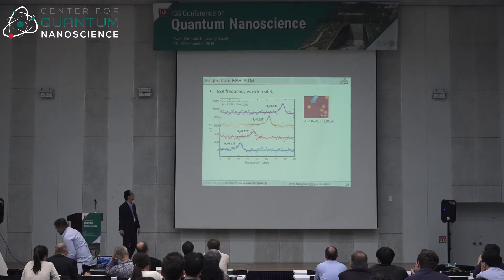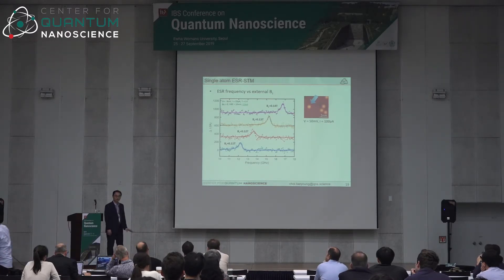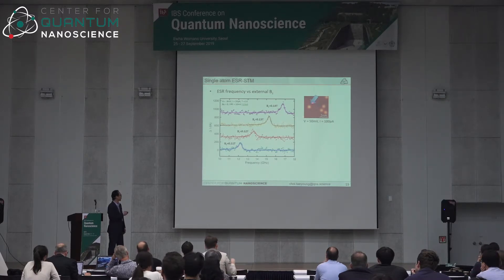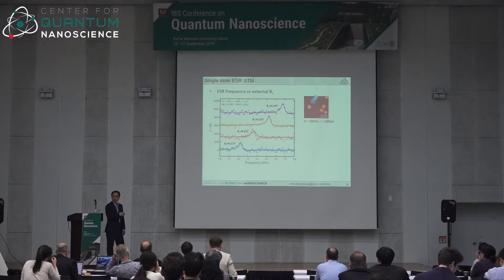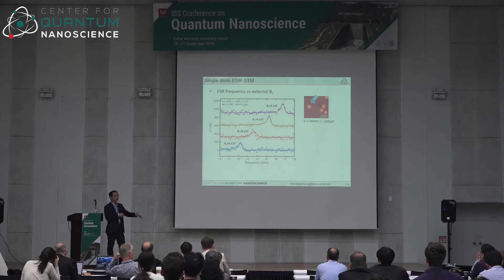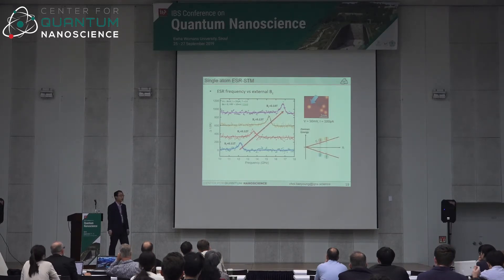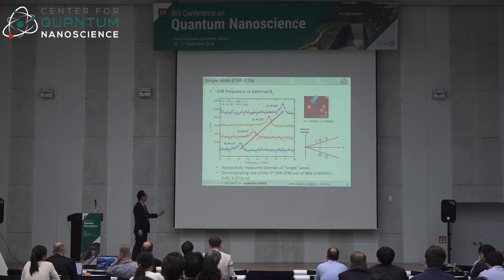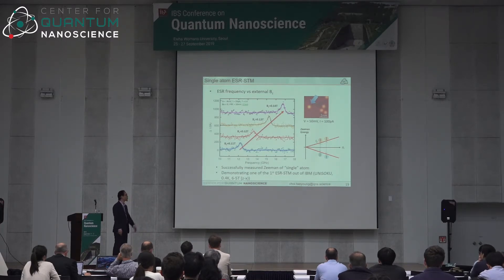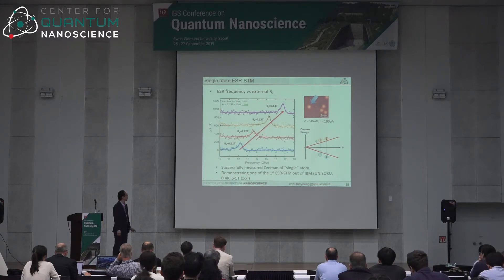This is ESR data taken using the Unisoku machine at QNS. We park the tip on an iron atom, sweep the frequency at a given background field, and see a resonance signal. To confirm it is real, we ramp the field linearly and see the frequency shift accordingly — confirming this is the true Zeeman energy of a single atom. This is one of the first ESR-STM demonstrations outside IBM lab using a commercial Unisoku machine.